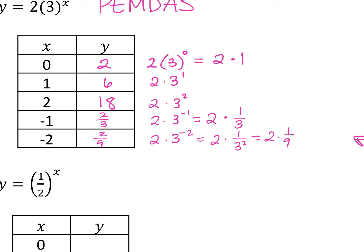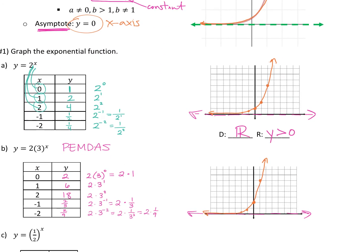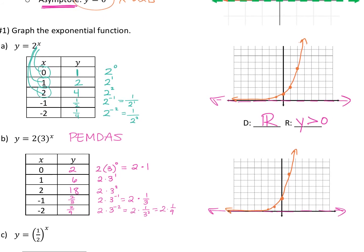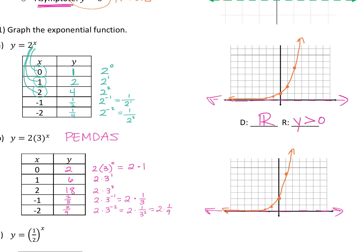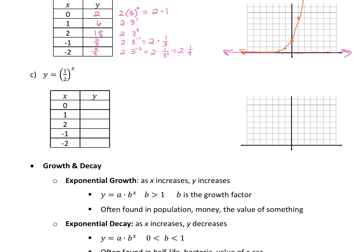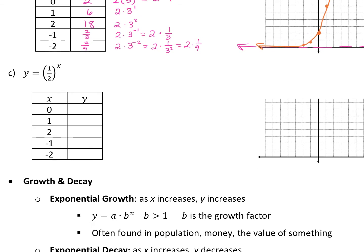Look at what we had for these first two: two to the x, two times three to the x. It was swooping up as you moved to the right. Now look at this one — y equals one half to the x power. Let's see what this does.